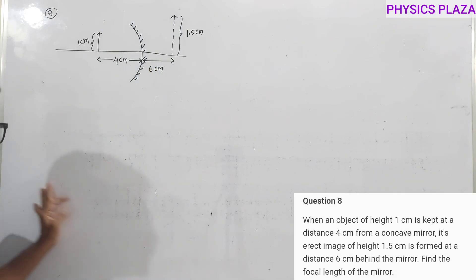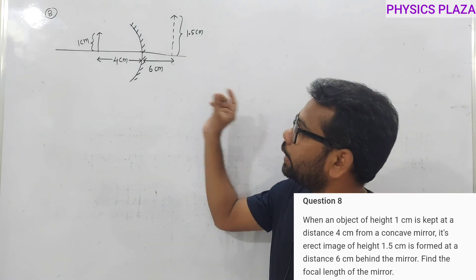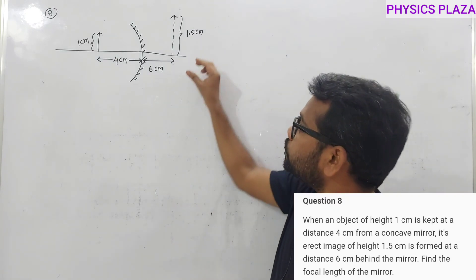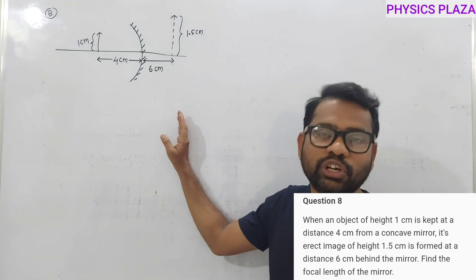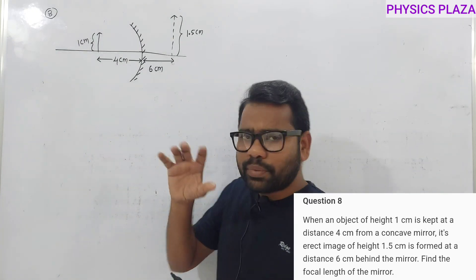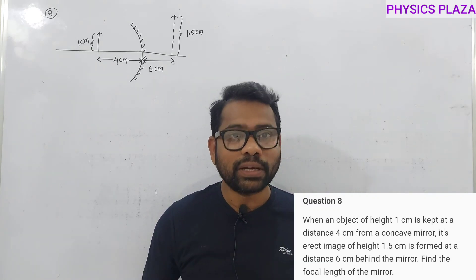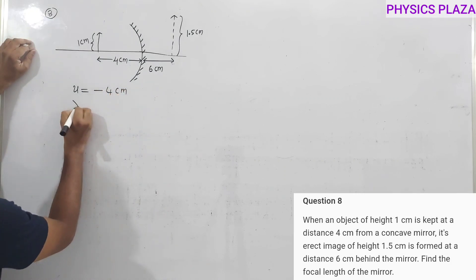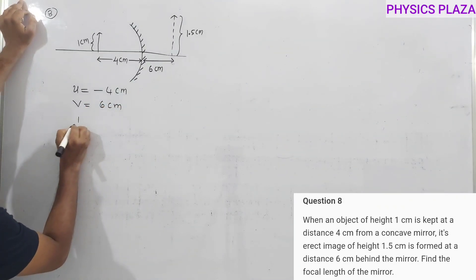Eighth numerical — sixth case of concave mirror: an object of height 1 cm is placed 4 cm in front of a concave mirror such that the image of height 1.5 cm is formed behind the mirror. Since the image is behind the mirror, it is a virtual image. Calculate the focal length. Object distance u = −4 cm; image distance v = +6 cm (behind mirror, so positive).